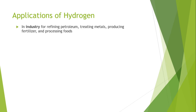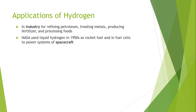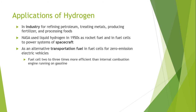Applications of hydrogen in industry include refining petroleum, treating metals, producing fertilizers, and processing food. NASA used liquid hydrogen since the 1950s as rocket fuel and in fuel cells to power spacecraft systems in the Apollo 1 mission. It can also be used as an alternative transport fuel for zero-emission electric vehicles. Fuel cells are two to three times more efficient than internal combustion engines, and electricity is directly generated from the fuel.